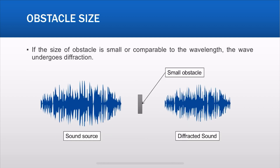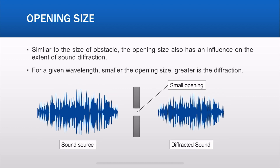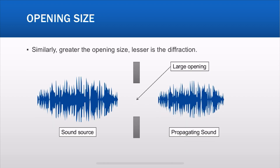Now if the obstacle size is small compared to the wavelength of the wave, the wave will undergo diffraction — it will bend around the obstacle and there is diffracted sound on the other side. The opening also has an influence on the extent of sound diffraction. For a given wavelength, the smaller the opening size, the greater the diffraction. So with a small opening there is diffracted sound on the other side, but if the opening is very large there is not much diffraction — the sound just passes through.